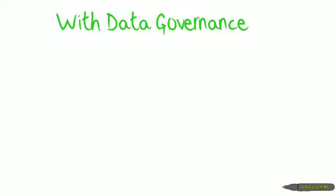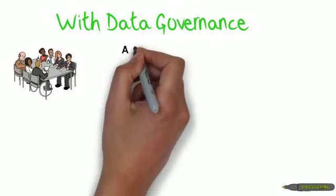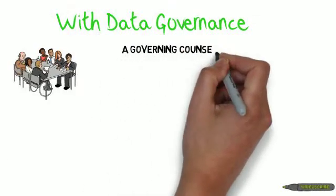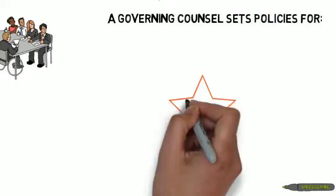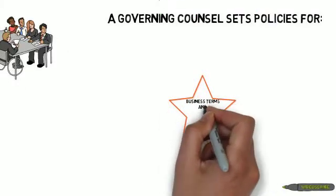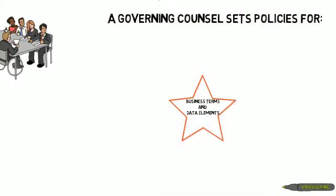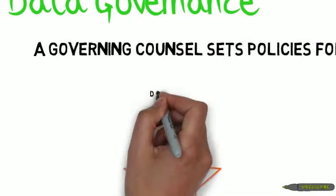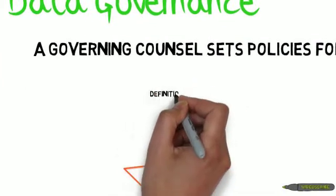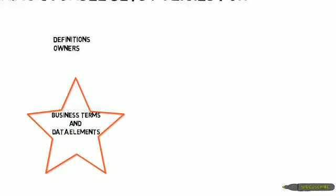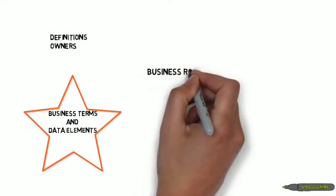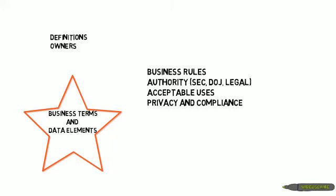With data governance, on the other hand, a governing council sets policies for things like business terms and data elements, such as their definitions and their owners. They set business rules, ruling authorities, acceptable uses for the data, and privacy and compliance policies.